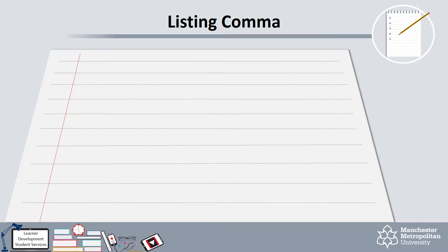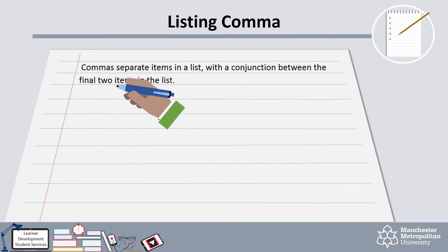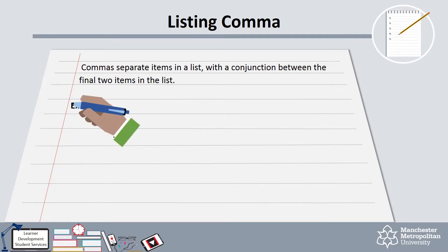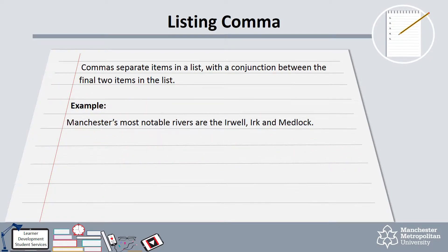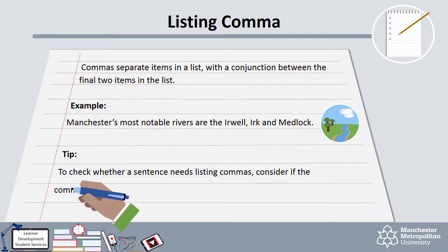Let's start with listing. When we have more than two items in a list, we should use commas to separate the items, with conjunctions such as 'and' or 'or' between the final two items in the list. For example: Manchester's most notable rivers are the Irwell, Urk, and Medlock. A good way to check whether you have used listing commas correctly is to try substituting them for a conjunction. If you can do this, then your listing comma is correct.